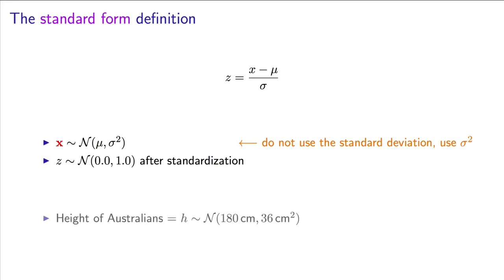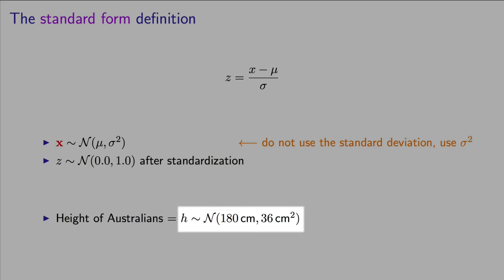If I wanted to say the height of people in Australia is normally distributed with a mean of 180 centimeters and a variance of 36 centimeters squared, in other words a standard deviation of 6 centimeters, I would write it this way mathematically.